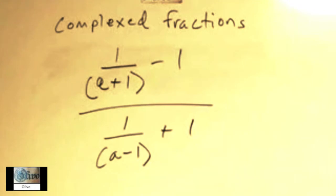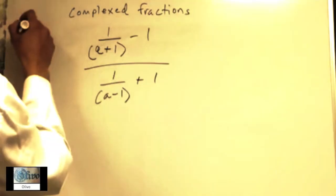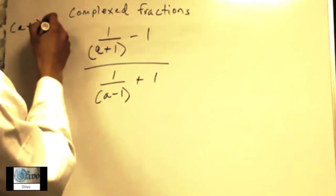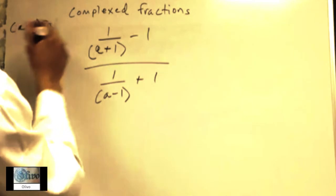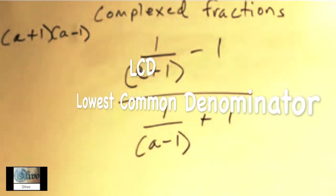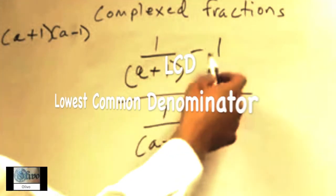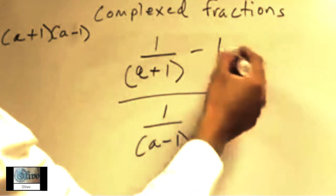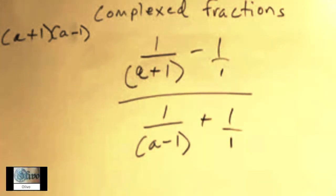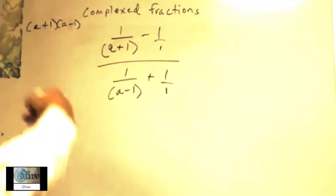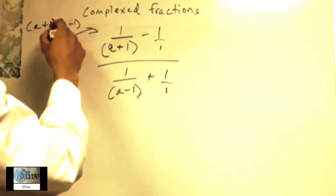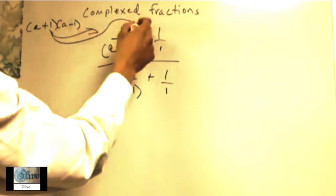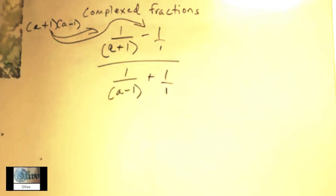But we could easily solve it just finding the LCD. So you know that the LCD is going to be (a+1)(a-1). That's the LCD—you see, it has this here, this here. You can think of this as 1 over 1.